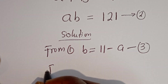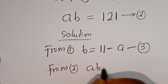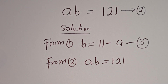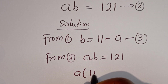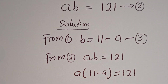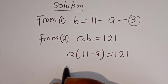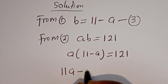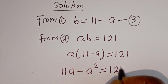Also from equation 2, A times B is equal to 121. Let's substitute for B. A bracket 11 minus A is equal to 121. Let's open the bracket: A multiplied by 11 is 11A, minus A multiplied by A, which is A squared, is equal to 121.